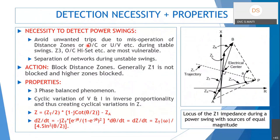During a power swing, the impedance fluctuates and may enter zone 3, zone 2, or even zone 1, which could cause tripping even during a stable power swing. We don't want the power system to trip due to relay misoperation for stable power swings. In general, during power swings we do not want our network to trip unnecessarily.